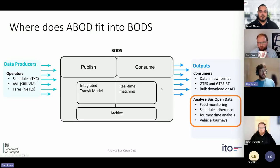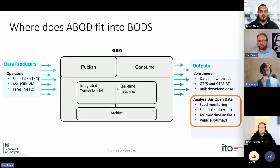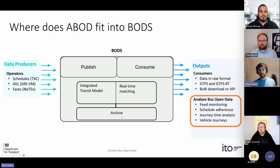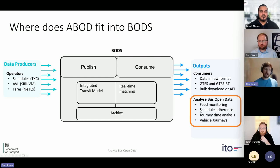Where does ABOD fit into this? Behind the scenes, we have what we call an integrated transit model and real-time matching. We aggregate all of the data together on BODS, match the schedule information and the real-time information together, and archive that information down into what we call a data warehouse. That then provides us with the features we see on Analyse Bus Open Data: things like feed monitoring, schedule adherence, journey time analysis, vehicle journeys, and so on.